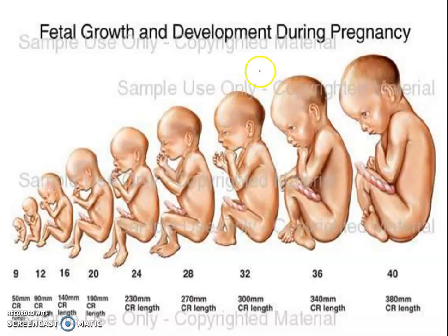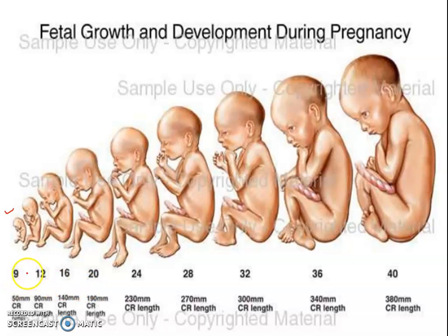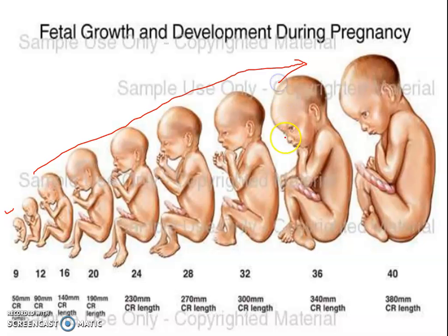Looking at the diagram of foetus growth and development during pregnancy, you can see the various stages. In the first stage, small structures are created. As development progresses, the foetus develops further. You can observe how the size of the foetus increases across the stages shown.